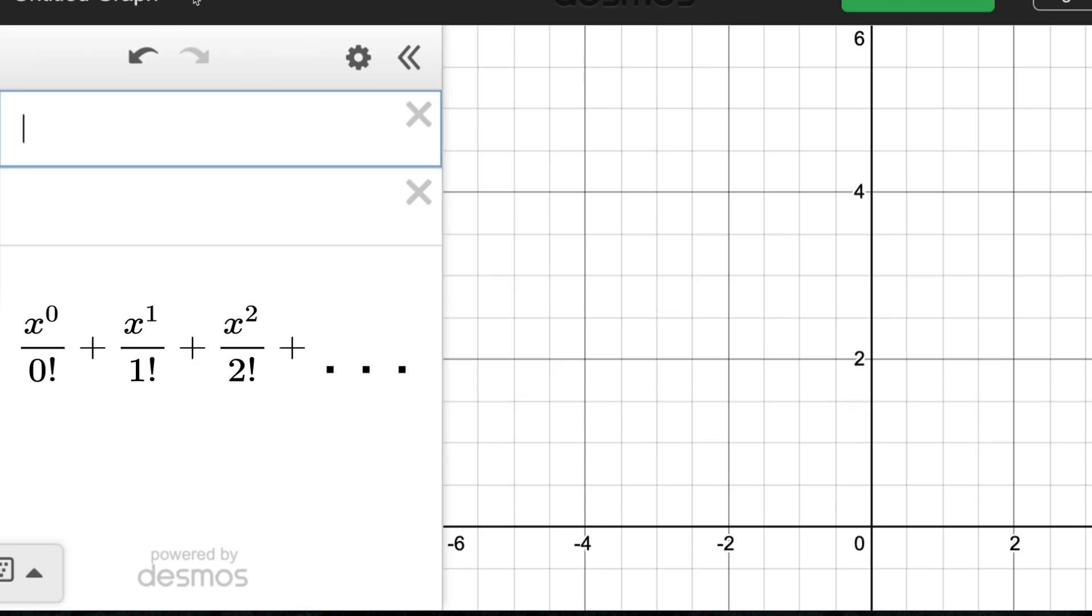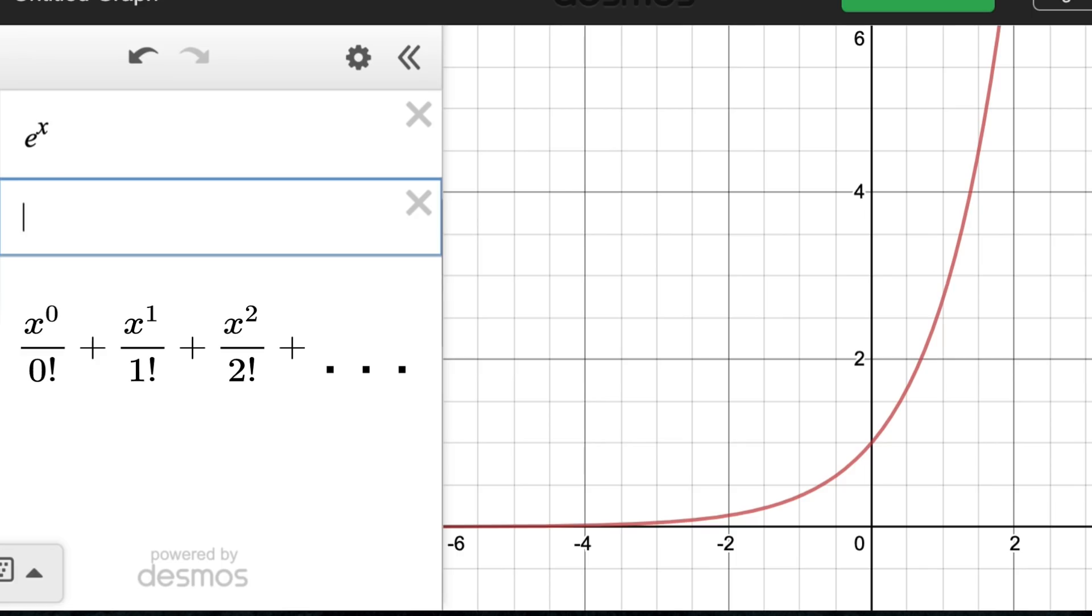Before I graph our infinite series, I'm going to put up the plot of e to the x, and you'll see why soon. Now, I cannot graph infinitely many terms, but I'll graph a good amount. The first term of x to the 0 over 0 factorial just comes out to 1. And the second term can be written just as x. So with only two terms, we have a line that is tangent to e to the x at x equals 0.